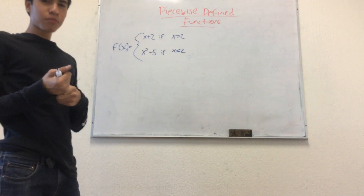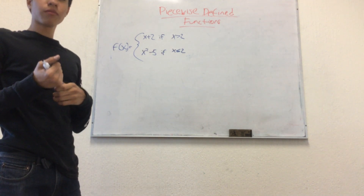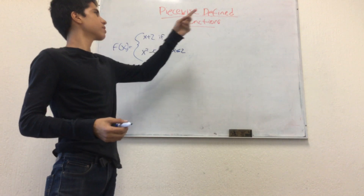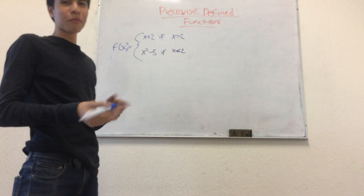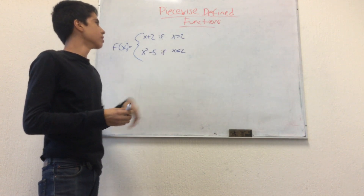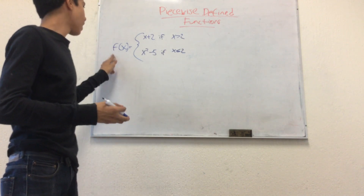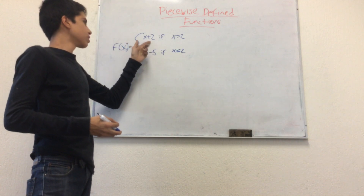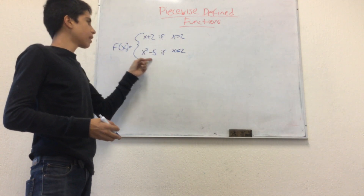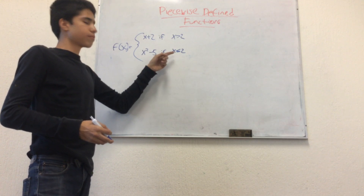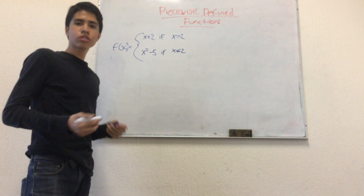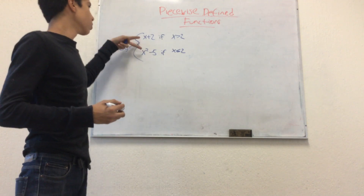Hello everybody. For my partial project we'll be discussing piecewise defined functions. These are normal functions that have to respect a rule. We have f of x equals x plus 2 if x is greater than 2, and x squared minus 5 if x is less than or equal to 2. First, what we need to do is graph our two equations.